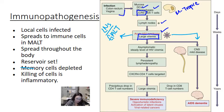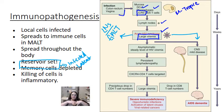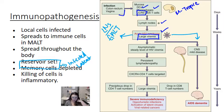This is also the point when the reservoir is set. The reservoir refers to cells throughout the body that are infected with the virus — often latently — and can be depleted but slowly. Even if you put patients on antiretroviral therapy and their viral load drops to zero, if you took them off therapy, the reservoir would start replicating the virus again. CD4-positive memory cells are a major reservoir.